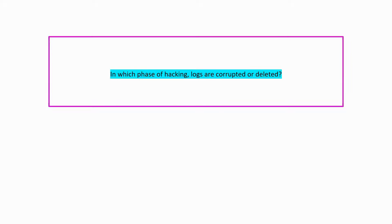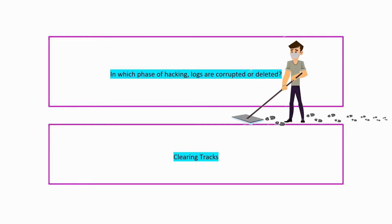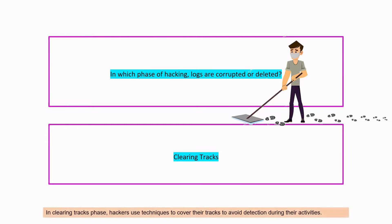In which phase of hacking are logs corrupted or deleted? Your answer should be: clearing tracks. Hackers use their techniques to cover their tracks to avoid detection during their activities.